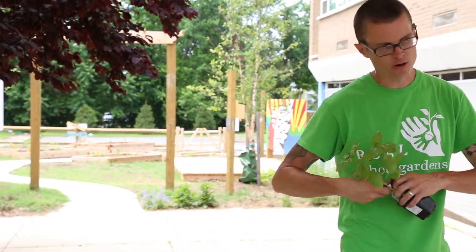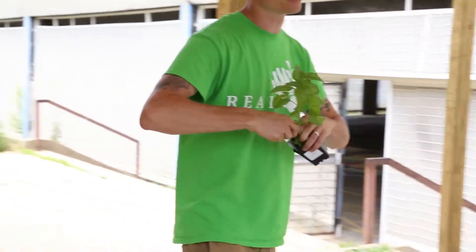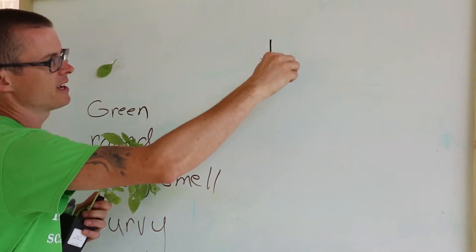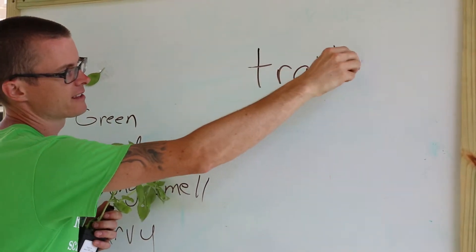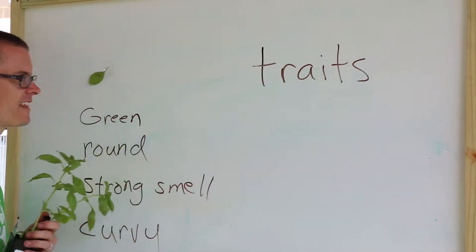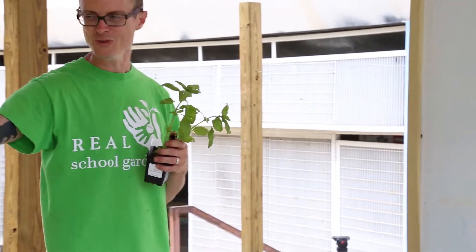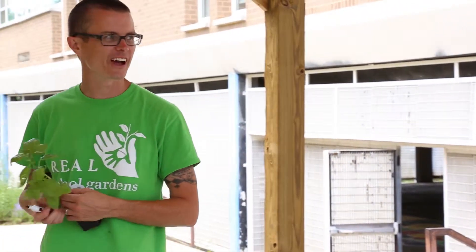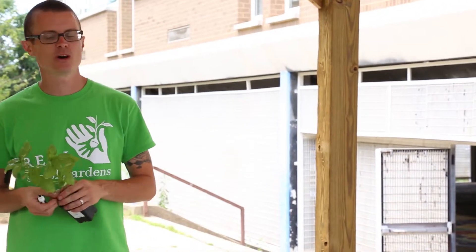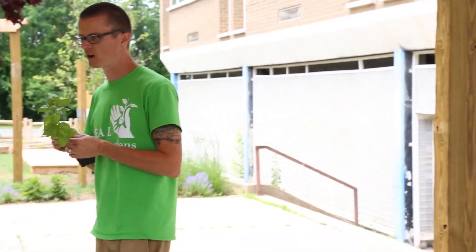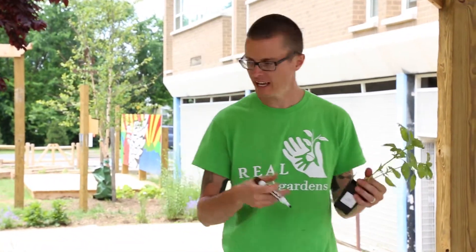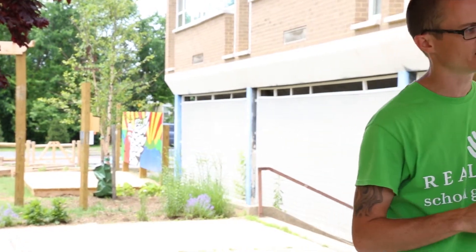We talked about traits and I'm going to write that word up here. I want you guys to make sure you see this. Traits. You guys say that again for me? Traits! Traits is how we describe something. It's the characteristics of a plant, animal, person, all that stuff.